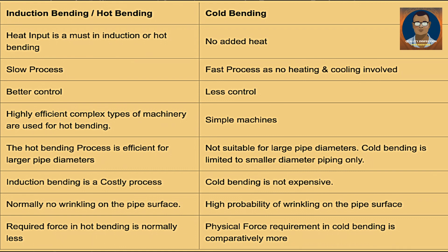In our field, cold bending is also used for larger diameter. In my experience, I have even used 60-inch diameter pipe for cold bending. Of course, the angle should be less and it should be a longer radius to avoid any wrinkling of the pipe. Induction bending is a costly process; cold bending is comparatively much cheaper. In cold bending, if we cannot control the bend angle and a proper mandrel is not used, there is a high probability of wrinkling on the pipe surface. The required force in cold bending is comparatively more because heat makes the pipe softer in the case of hot bending.